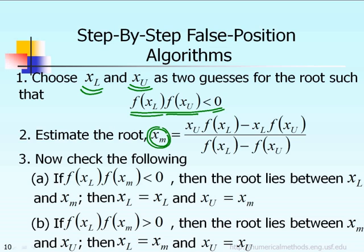After we calculate the predicted root x sub m, then step number 3, we have to make a check. There are only three possibilities. If f(xl) times f(xm) is negative, then x sub m, the newly predicted root, will play the same role as x upper bound. So the new lower bound stays the same, but the new upper bound will be different and equal to the newly predicted root, because x sub m plays the same role as x sub u based on these two similar inequality equations.